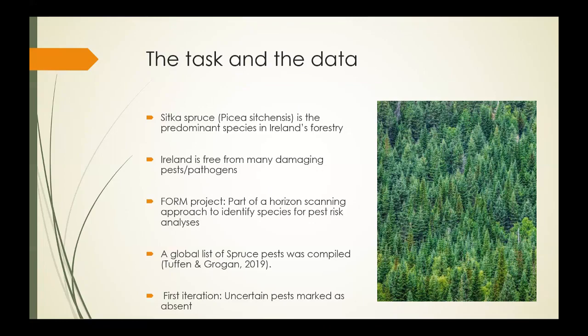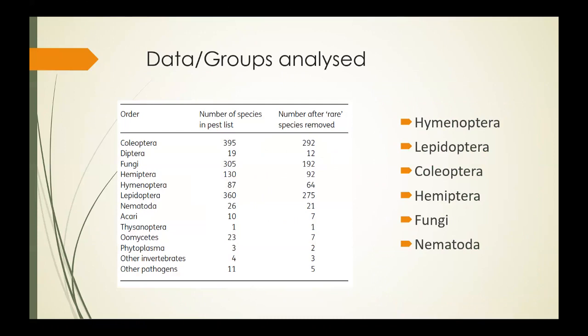As a result, for the first iteration of the analysis, any pests whose presence in Ireland was listed as uncertain were coded as absent. The data from this list was the basis for the analysis. This table shows the number of species identified within the original pest list, broken down by order. This is my starting point for the hierarchical clustering.